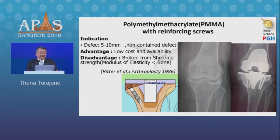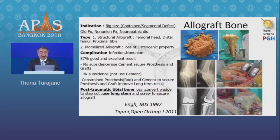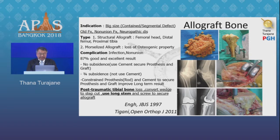If the defect is 5 to 10mm, we need to think about adding a screw, but we need to worry about positioning it correctly because the cortex can be broken, and there is a risk of rub to the titanium. In rheumatoid cases, we put the bone graft on both sides. For larger defects — such as old fractures or non-union, or cases with neuropathic bone — long-term results show 87% good results in the literature for post-traumatic tibial bone loss. The technique involves a step cut with a stem.